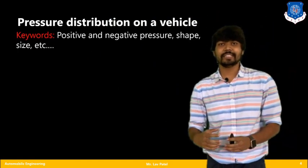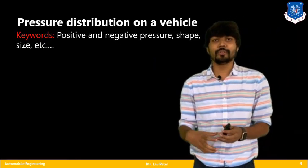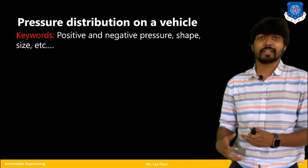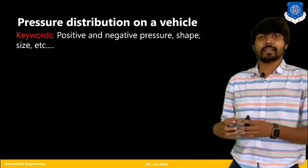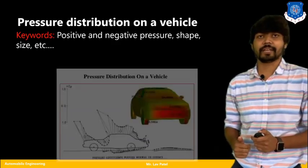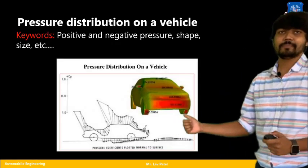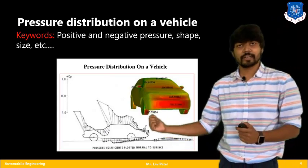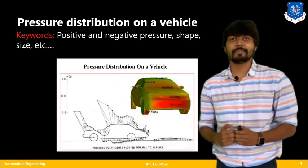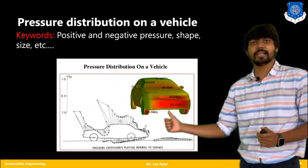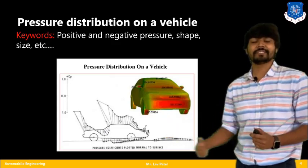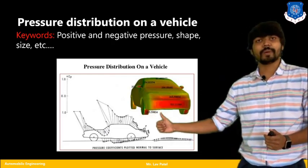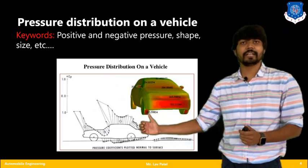Let us begin with the first topic: pressure distribution on a vehicle. While in a driving condition, several pressures are produced — positive pressure and negative pressure — and these are affected by the shape and size of the vehicle. In the diagram, you can see a car running on a road with air flowing from the front. The red portion indicates maximum pressure, where airflow directly impacts the frontal portion of the car.